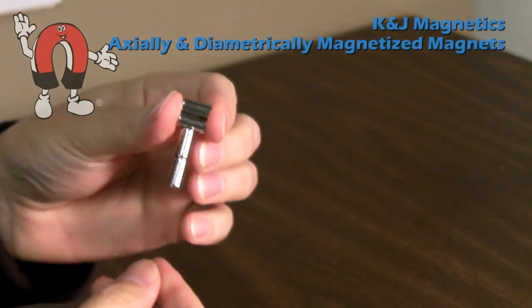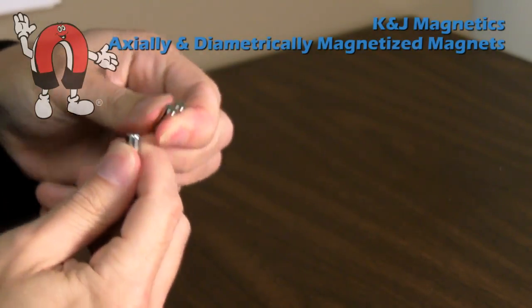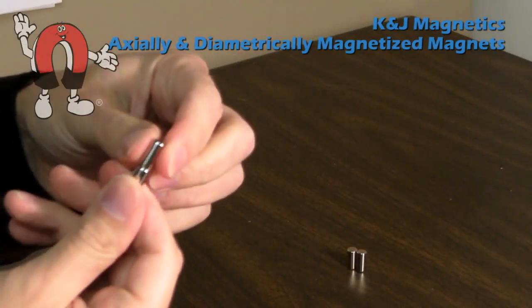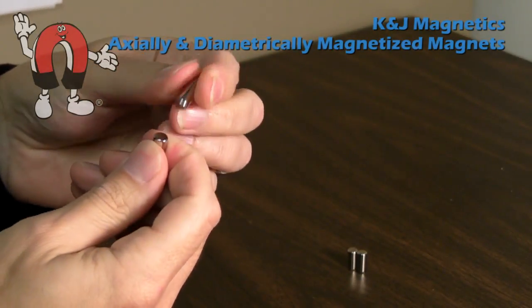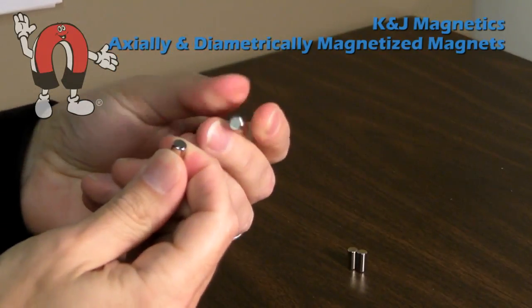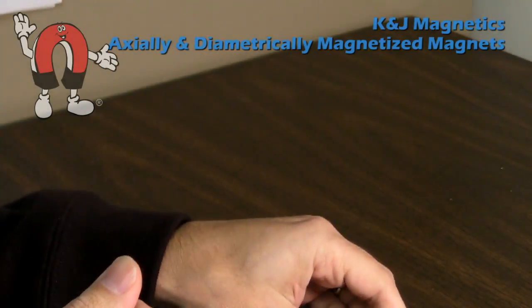Here we have axially and diametrically magnetized magnets. The axially magnetized magnets tend to stick with their poles touching end to end on the flat circular faces.